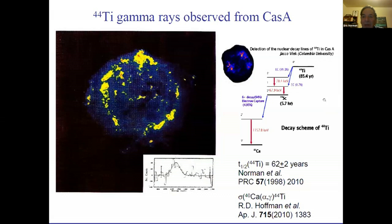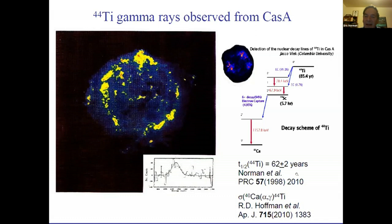Supernova 1987A isn't the only evidence of recent nucleosynthesis. In Cassiopeia A, a supernova from the 1600s still visible with telescopes, gamma-ray telescope images show bright spots of the 1157 keV gamma ray produced by the decay of titanium-44. Titanium-44 has a half-life of about 62 years, and even though this supernova occurred over 300 years ago - not many half-lives - you can still see live titanium-44 coming from the remnant. Titanium-44 is one of those alpha-particle nuclei made in the sequence of reactions building from silicon to nickel-56.